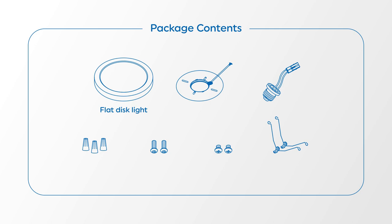In the packaging for each disc light, you'll find an installation guide, one flat disc light, one mounting plate, one E26 adapter, three wire nuts, two long screws, two short screws, and two torsion springs.